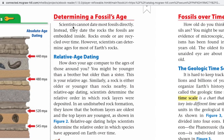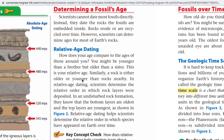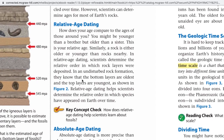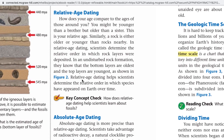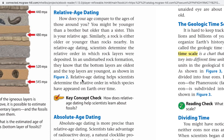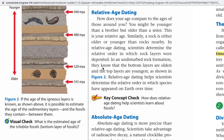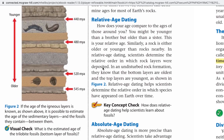Determining a fossil's age: Scientists cannot date most fossils directly. Instead, they date the rocks the fossils are embedded inside. Rocks erode and are recycled over time, however scientists can determine ages for most of Earth's rocks. In relative age dating, scientists determine the relative order in which rock layers are deposited. In an undisturbed rock formation, the bottom layers are oldest and the top layers are youngest. Relative age dating helps scientists determine the relative order in which species have appeared on Earth over time.